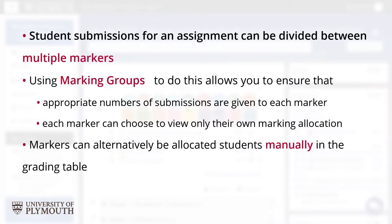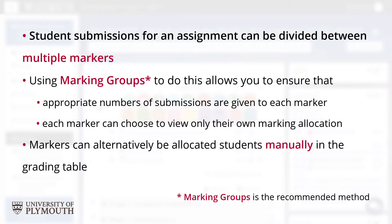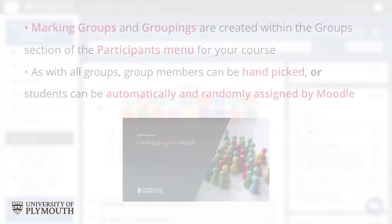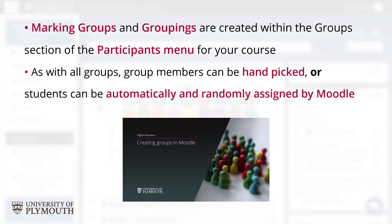There are two ways you can allocate student submissions to markers within a module. The recommended process is to use the groups functionality within the Participants section of the Moodle course to create marking groups and groupings. These groups can either be handpicked or automatically populated by Moodle on a randomised basis.